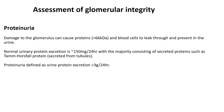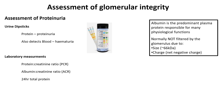Looking at the assessment of glomerular integrity: proteinuria involves damage to the glomerulus, which can cause proteins greater than 66 kilodaltons and blood cells to leak through and appear in the urine. Normal urinary protein excretion is 150 milligrams per 24 hours, the majority consisting of secreted proteins such as Tamm-Horsfall protein secreted from tubules. Proteinuria is defined as urine protein excretion greater than 3 grams per 24 hours. It can be measured via dipsticks, and there are also laboratory measures such as protein creatinine ratio, albumin creatinine ratio, and 24-hour total protein. Albumin is the predominant plasma protein and is normally not filtered by the glomerulus due to its size and net negative charge.